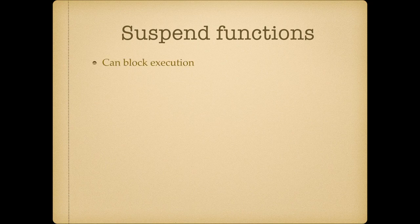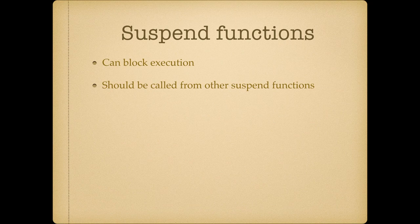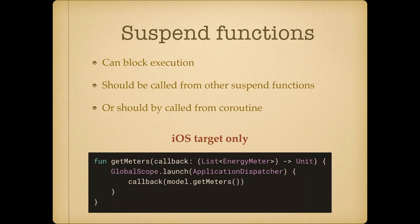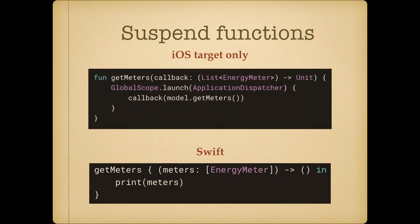Suspend functions can block execution. If you're familiar with JavaScript, they're similar to async functions there. Suspend functions should only be called from other suspend functions or from a coroutine. A coroutine looks like globalScope.launch with the application dispatcher — that's very similar to the main queue and dispatch queue in Swift. From Swift you cannot call a suspend function directly, so for our iOS target we basically wrap all our suspend functions in functions with a callback. From Swift you call it with a closure and it works like magic.